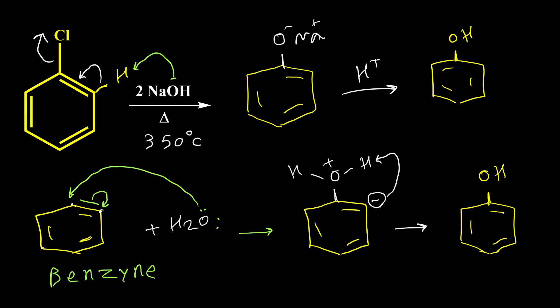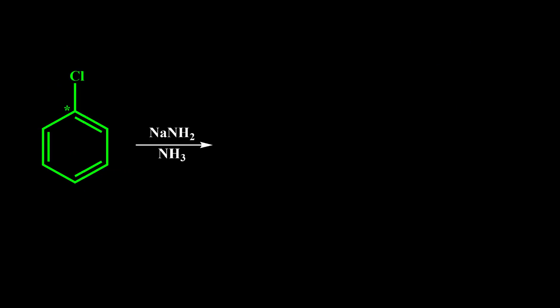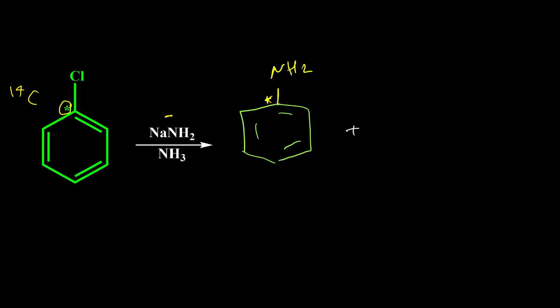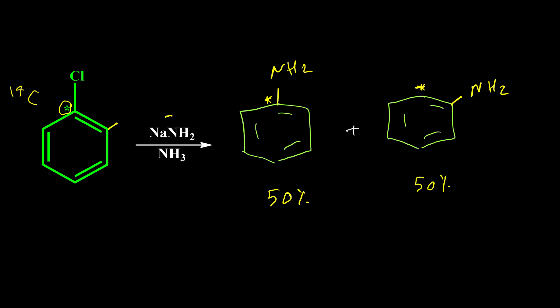There are a couple of ways to prove that benzyne formed during this reaction. We can have the same type of reaction when we use NH2⁻, which is a very strong base, stronger than hydroxide. To prove benzyne formation, the ipso carbon — the carbon bearing the leaving group — is labeled with carbon-14, a radioactive isotope. When we perform the reaction, we get two different products: NH2 attached to the labeled carbon and NH2 attached to the adjacent carbon, with a 50/50 ratio.